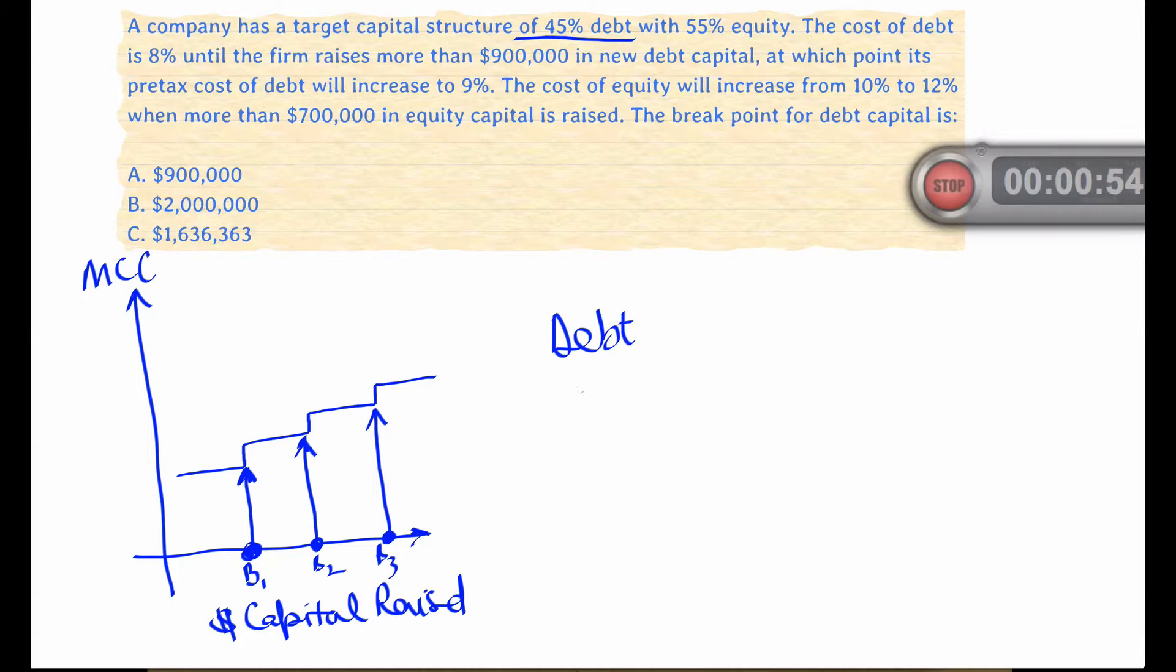We look at the target capital structure and there's 45% debt, which means that when there are 0.45 units of debt there is one total dollar of total capital raised.